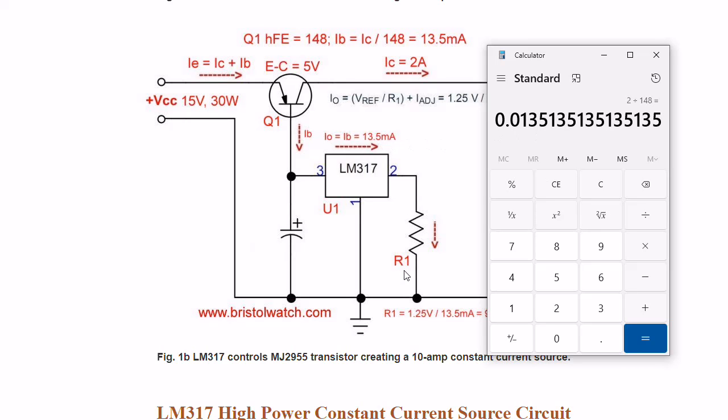Now to determine the value of R1, I would divide 1.25 by 13.5 milliamps. 1.25 volts divided by 0.0135 amps, and it comes out to 92.5 ohms. There's no such thing as a 92.5 ohm resistor. Your closest resistor value is going to be 91 ohms. Place that in there, and you're very close to the 2 amps that you need.